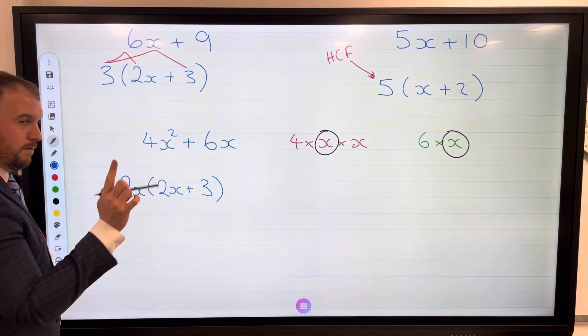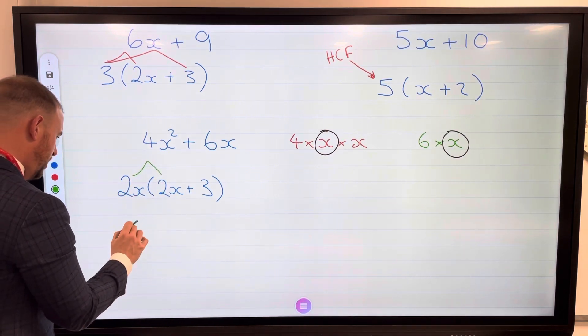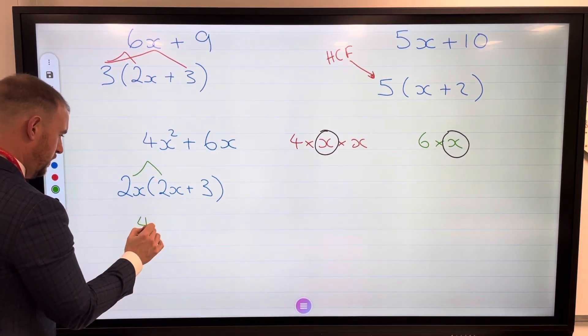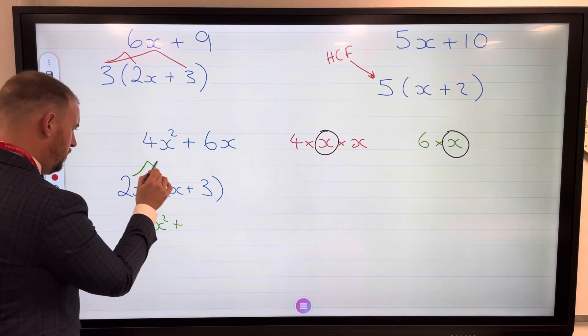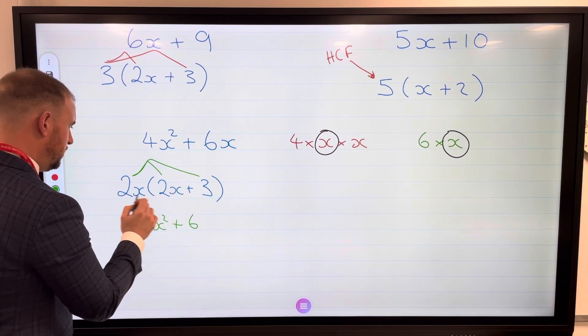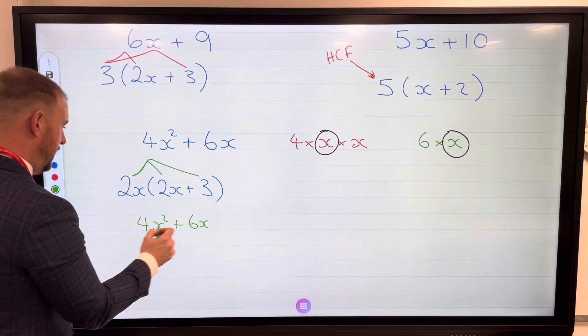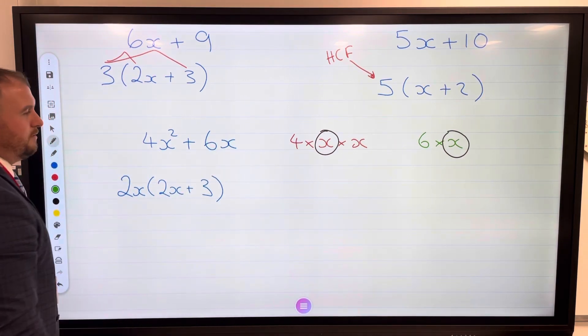Just to check, let's expand: 2x times 2x is 4x², plus 2x times 3... well, 2 times 3 is 6, so 2x times 3 must be 6x. Is that the same as that? Yes it is, fantastic, we have factorized correctly.